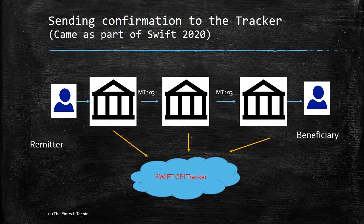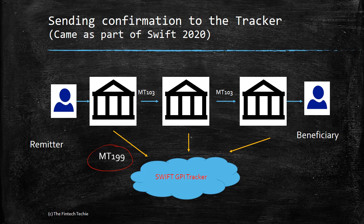The second part of the problem is: how do I ensure that each bank sends across this confirmation at every stage? And this is achieved through MT-199. So every bank will send an MT-199, a confirmation saying that they have received the message. The UETR or the reference number came as part of Swift 2018, whereas the MT-199 came as part of Swift 2020.